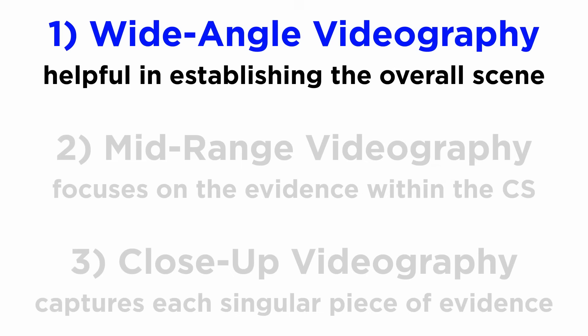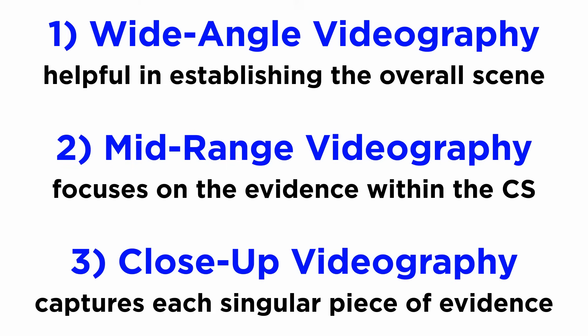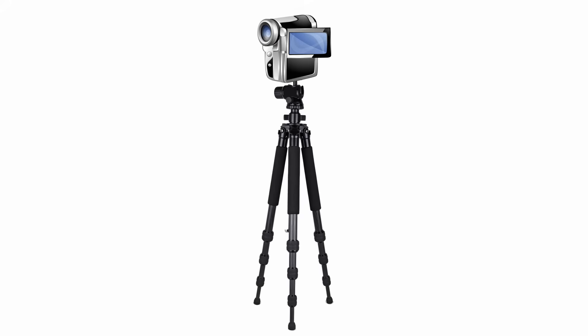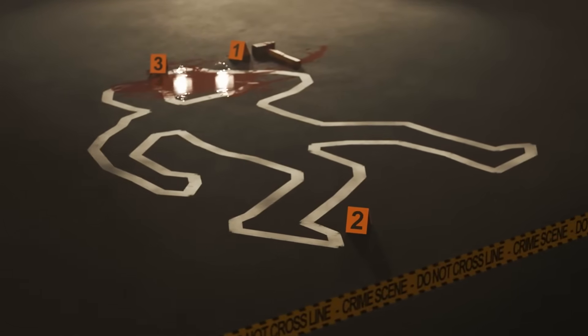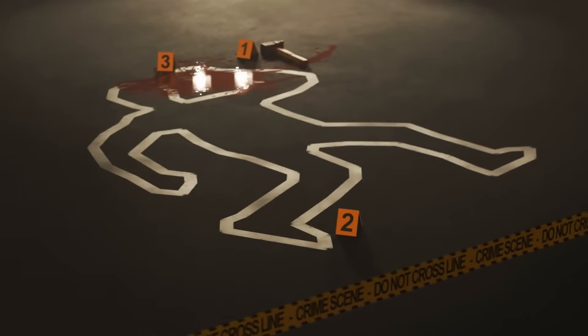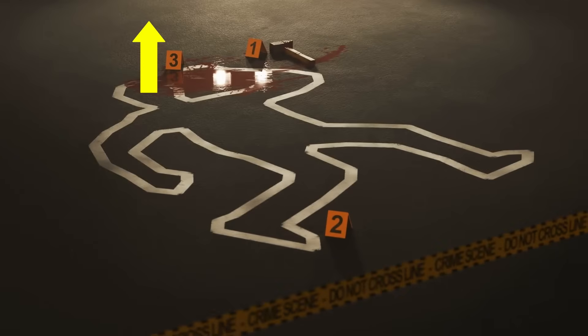First, overall shots are taken, followed by mid-range and close-up shots. The shots should be steady, and a tripod is preferred whenever possible. The video should not include any bystander or member of the investigating team. A shot can be taken from the position of the victim as well, to understand how they viewed the CS when the crime occurred.